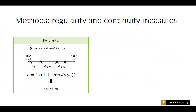Regularity is calculated based on the dates of GP visits. For each visit during the exposure period, we count the number of days since the prior visit, then calculate the coefficient of variation in this number of days, and use a simple formula to convert that to a score between zero and one.